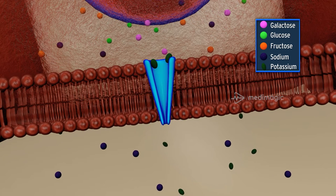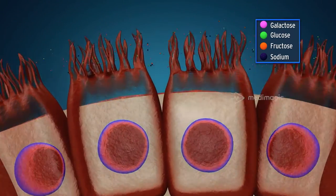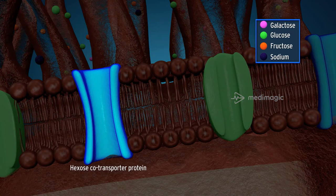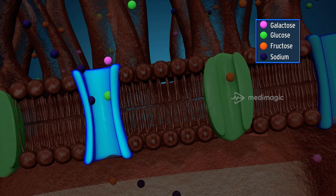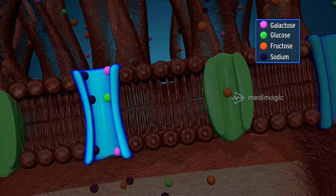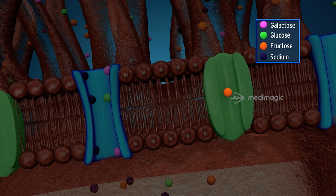An electrochemical gradient with a low concentration of sodium leads to the transport of sodium ions from the lumen into the cell through a hexose cotransporter protein, SGLT1. Along with the sodium ions, 6-membered hexose sugar molecules like glucose and galactose enter the cell through the cotransporter.